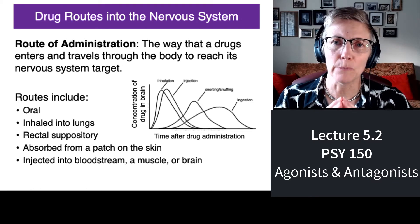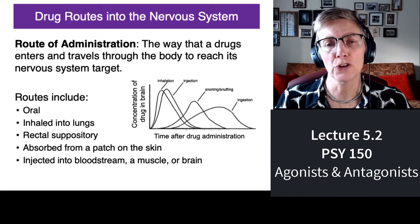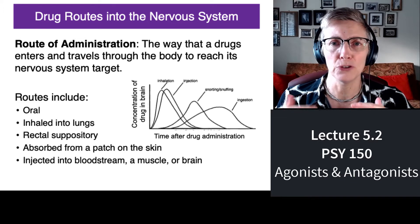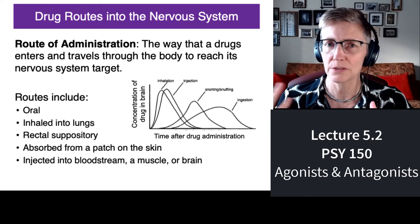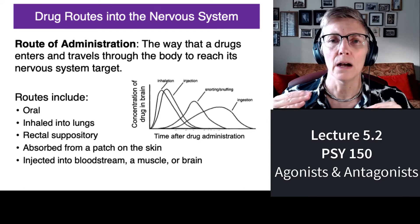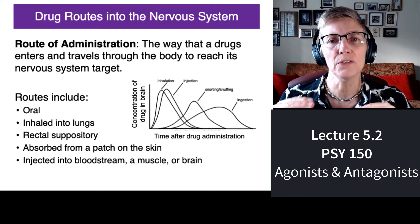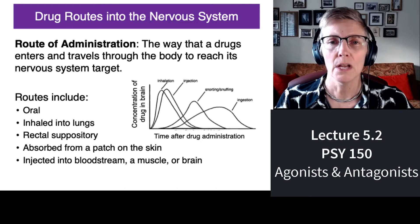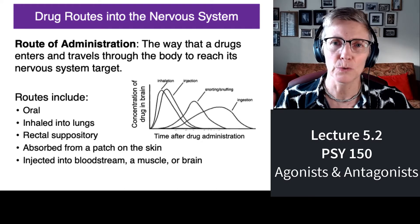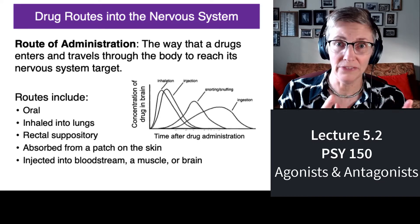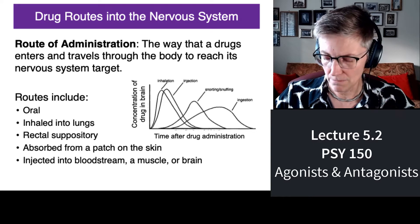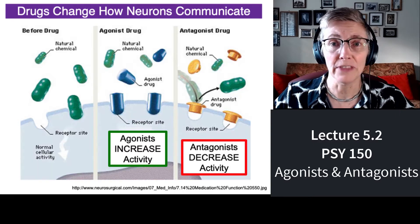Some people get addicted to a particular drug in pill form. Eventually your body adapts to the drugs you take, whether it's heroin or caffeine. As a result, you need more of the same drug to get the same effect. In order to get more of an effect, some people will switch from taking a pill to delivery of that same drug by injection.